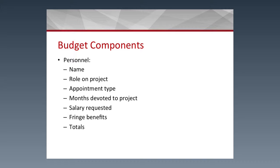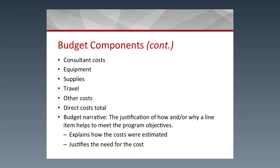These are the budget components. The first is personnel, where you list the name, role on the project, appointment type, and months devoted to the project — which can be reflected as calendar months, academic months, or summer months — along with the salary requested, fringe benefits, and overall totals. Other costs include consultant costs, equipment, supplies, and other expenses that don't fit other categories. You add up each category to arrive at a grand total direct cost.